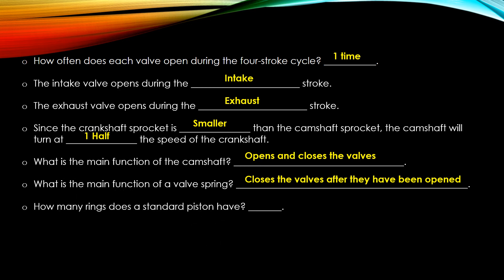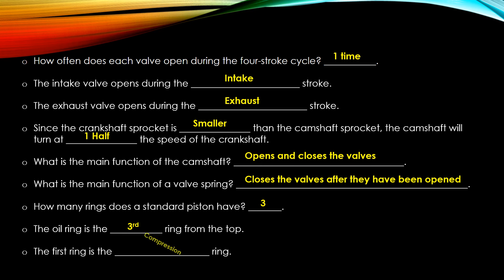How many rings does a standard piston have? Standard pistons have three rings. The first ring is the compression ring, the second is a secondary or relief compression ring — both top two are compression rings — and the third ring from the top is the oil ring. Know that the first ring is compression and the oil ring is the third one.